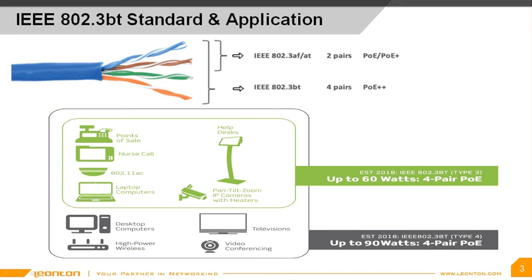By using the four twisted pairs, the amount of available power can be doubled because two PSE controllers will be used to power both the signal pairs and the spare pairs. Some examples of applications for high-power PoE include the retail point-of-sale system, interactive kiosks, PTZ security cameras with heaters, and high-performance wireless access points.